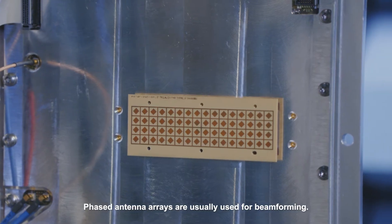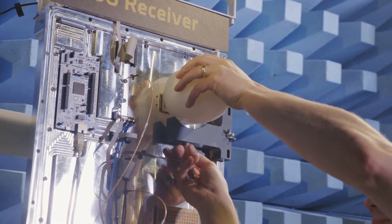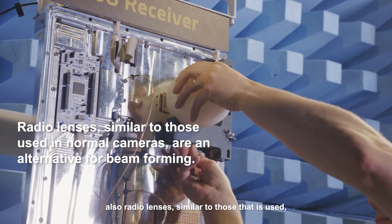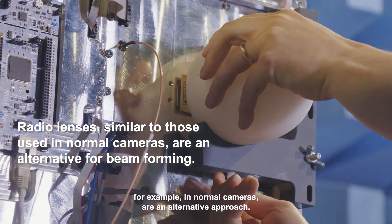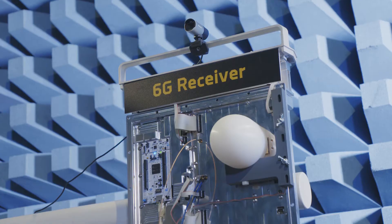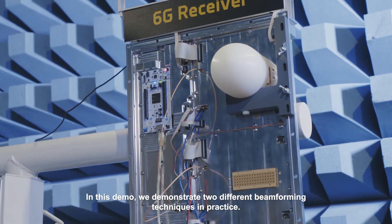Phased antenna arrays are usually used for beamforming. When increasing the frequency, radio lenses similar to those used in normal cameras are an alternative approach. In this demo we demonstrate two different beamforming techniques in practice.